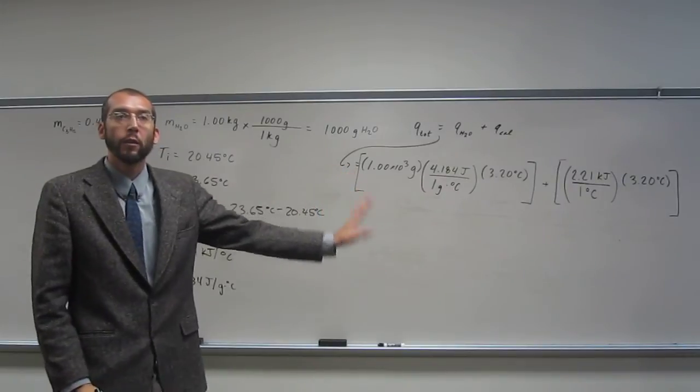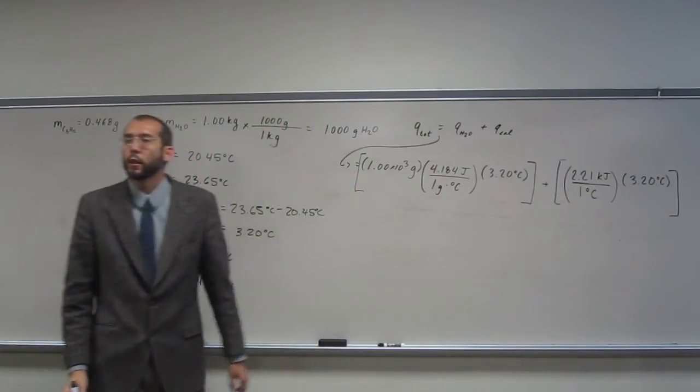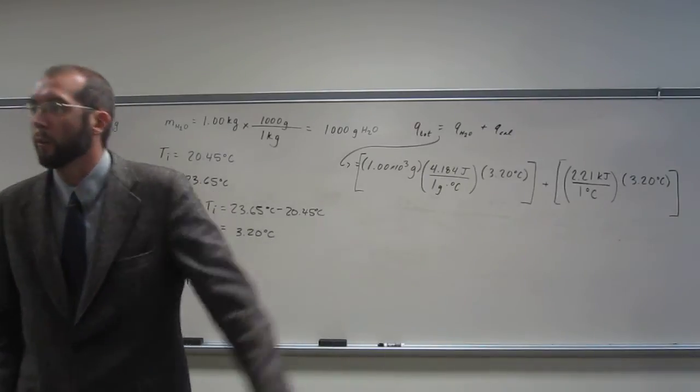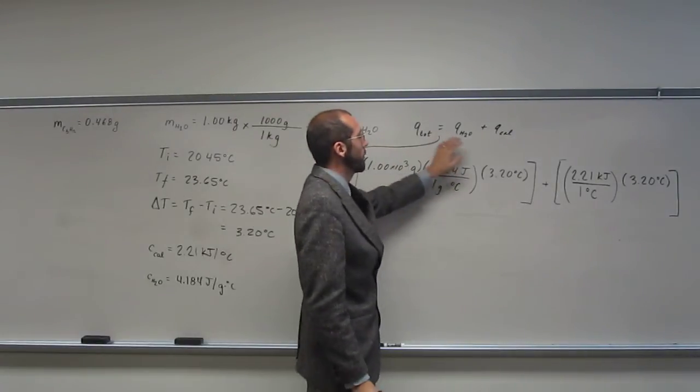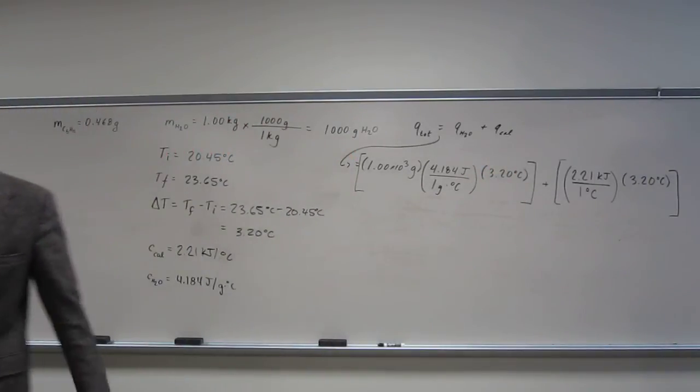Is everybody okay with that formula? What equation is that? This is the equation for the bomb calorimeter. Q total equals QH2O plus Q calorimeter. That's the equation.